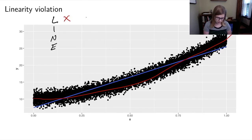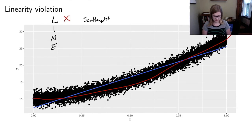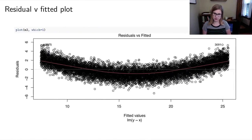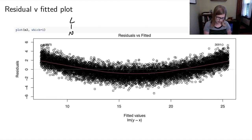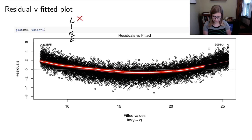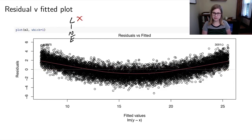Even when you simulate data to violate just one condition, you often see other conditions going bad as well. Looking at the residual versus fitted plot, the lack of linearity is visible again — the red line is not flat along the dotted reference line. It should be flat; instead it curves, showing a clear linearity violation.